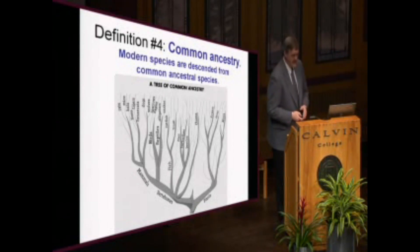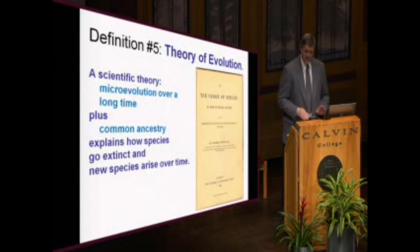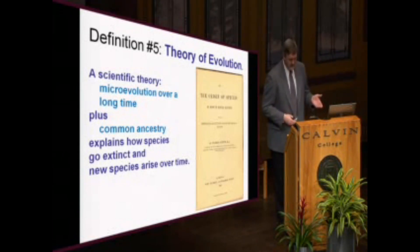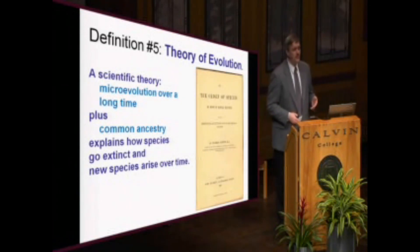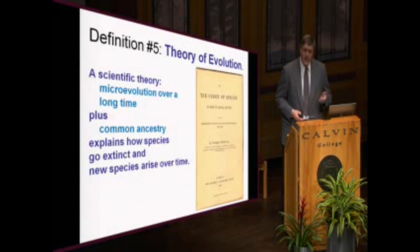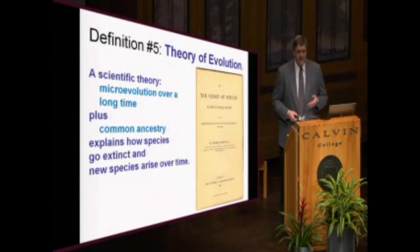That brings us to the fifth definition. The theory of evolution refers to a modern version of Charles Darwin's theory. It states that random mutations and reproductive success not only produce small changes over a few centuries, like those cichlid fish I mentioned, but also produce large changes over millions of years. All plants and animals are descended from a common ancestor.